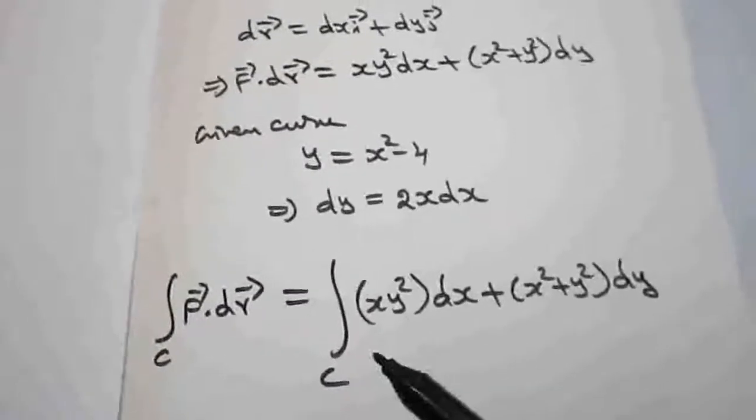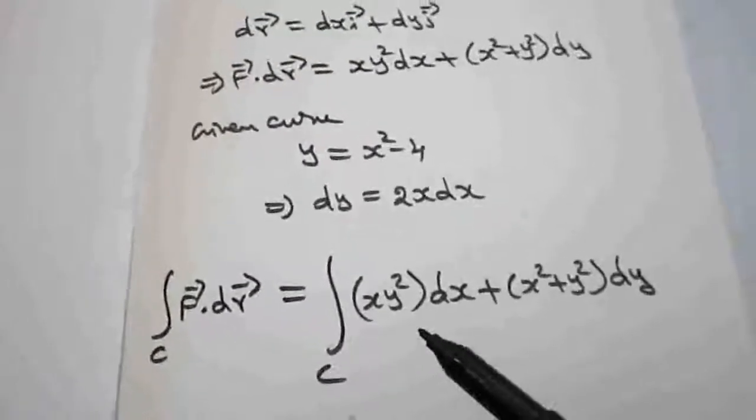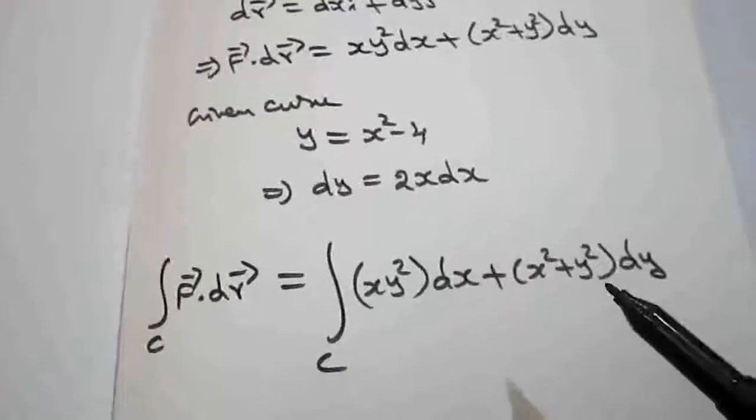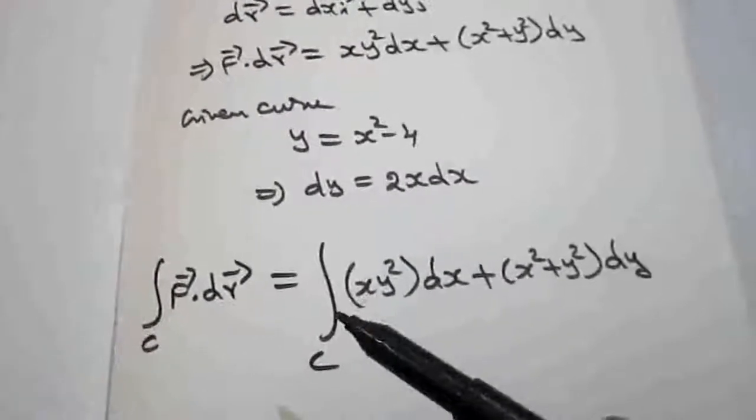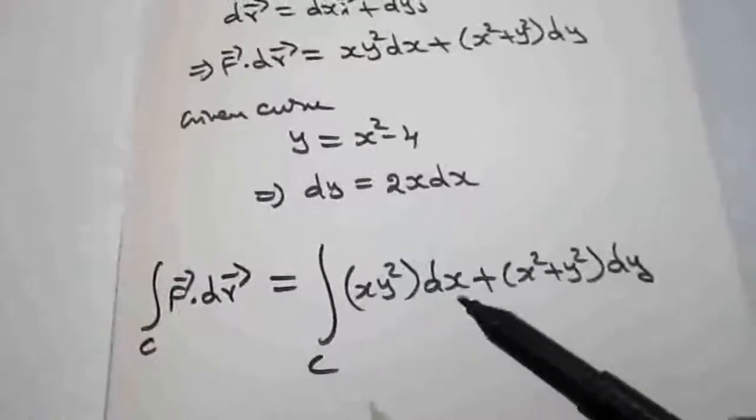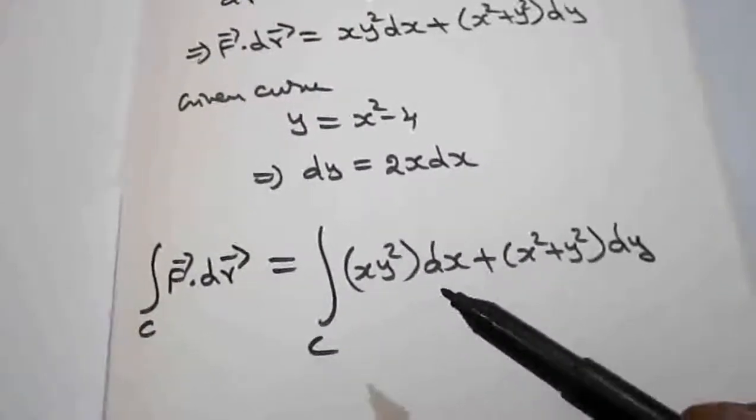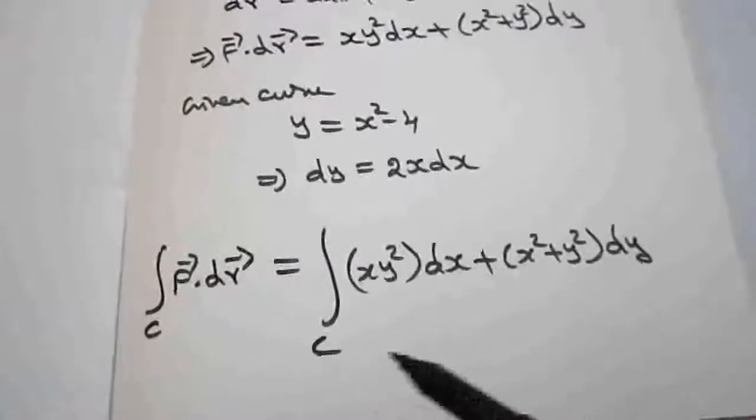So we cannot integrate, because the single integral means we have only one variable. So I want to convert it into a single variable in terms of x. Either in terms of x or in terms of y. But in this problem, in terms of y is easy compared to x.